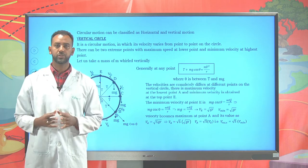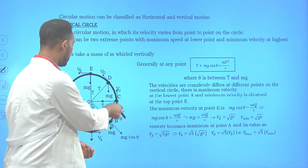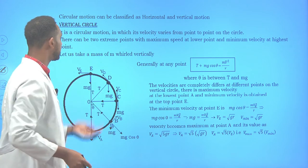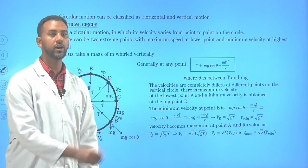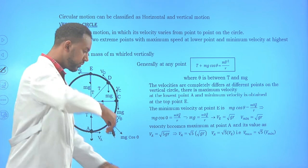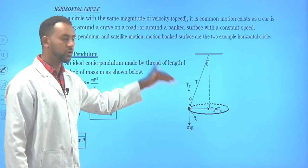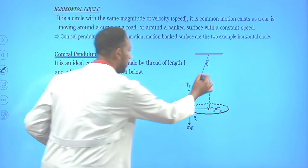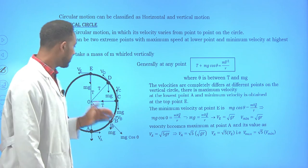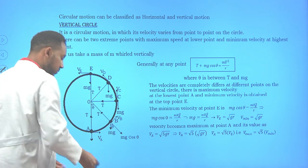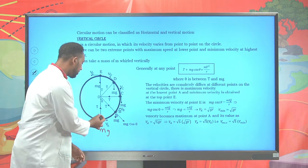Circular motion can be classified into two types: vertical circle and horizontal circle. For a vertical circle, imagine holding a stone on a thread and swinging it in a vertical circle. For a horizontal circle, if you hold the thread and make it form a cone shape, that is called a conical pendulum. On a vertical circle, at the bottom there is a weight acting downward and tension acting upward.